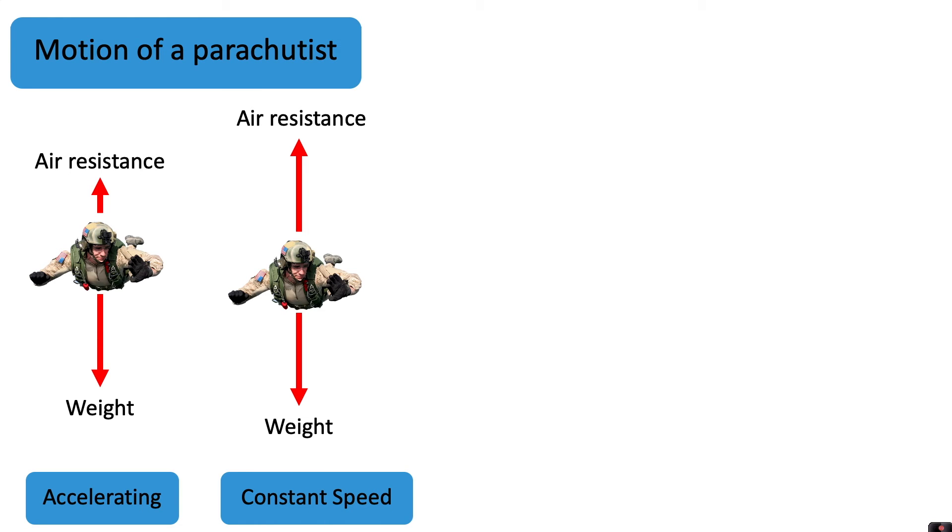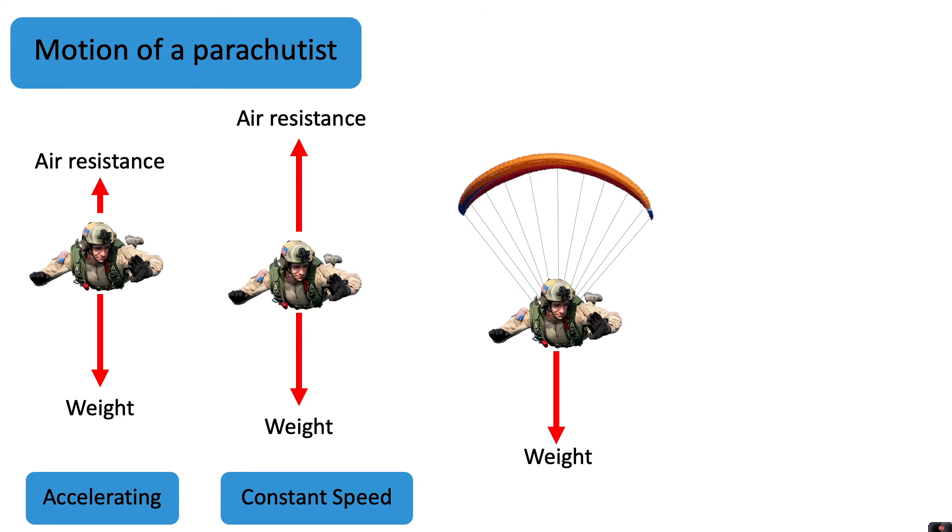And at some point, they will deploy their parachute. And when this happens, air resistance increases. Now we have a situation where we have unbalanced forces again and the parachutist will decelerate.